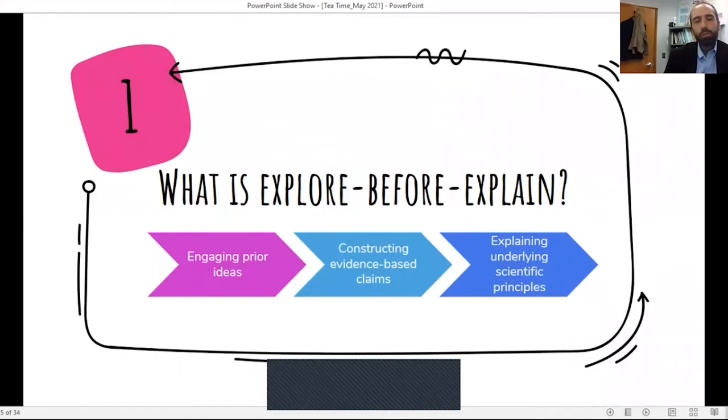So in a nutshell, Explore Before Explain Teaching really focuses on three critical components. So we're going to start with this phase where we're engaging students' prior ideas. We're going to understand their background experiences. We're really going to set the stage for learning, and we're going to ground it in phenomena and things that happen in their everyday lives. Step two is all based on constructing evidence-based claims. So we want to give kids firsthand experiences with data that's going to serve as evidence for their sense making before we jump in and explain any scientific terms or give them vocabulary. And then lastly, we're going to look at ways that we can explain the underlying concepts so that students really understand the scientific principles. This is going to allow them to talk the talk of science, use science vocabulary, it's going to allow them to sophisticate understanding.